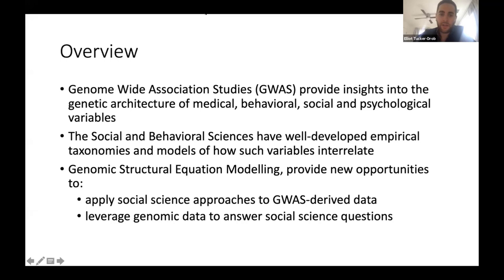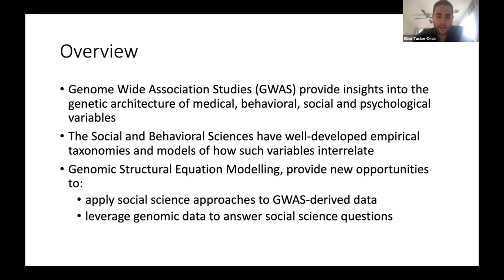Genome-wide association studies provided insights into the genetic architecture of medical, behavioral, and social and psychological variables. The social and behavioral sciences have well-developed empirical taxonomies and models of how such variables interrelate. What I'm proposing — and what we've been doing over the past couple of years — is marrying these two approaches using a multivariate method we call genomic SEM, integrating social and behavioral scientific approaches to multivariate data analysis with approaches developed in statistical genetics.